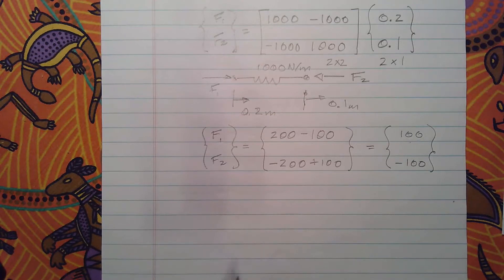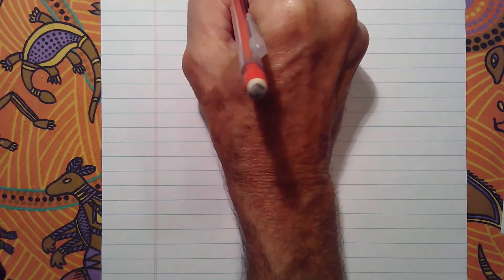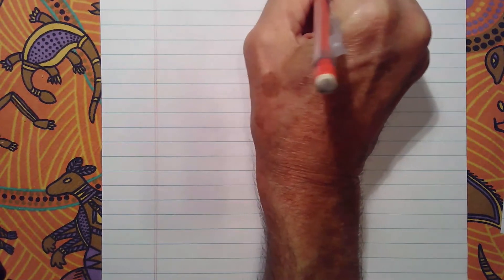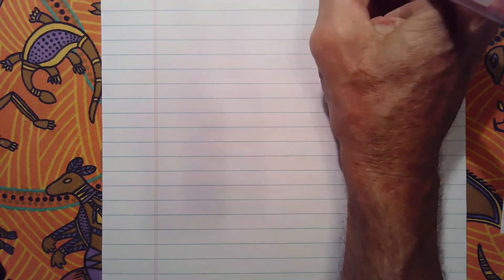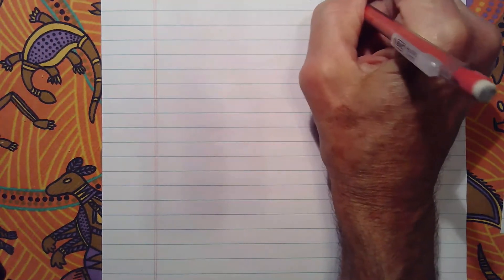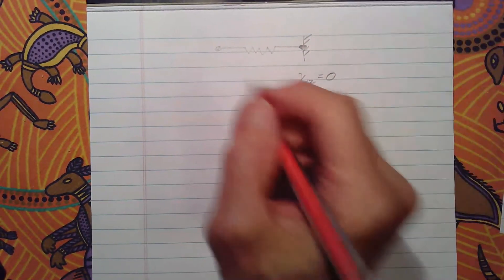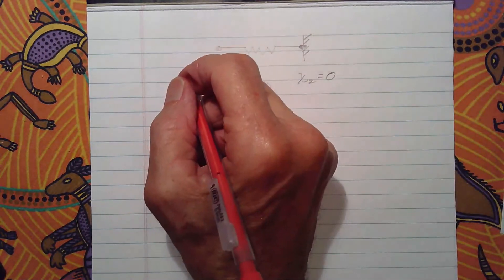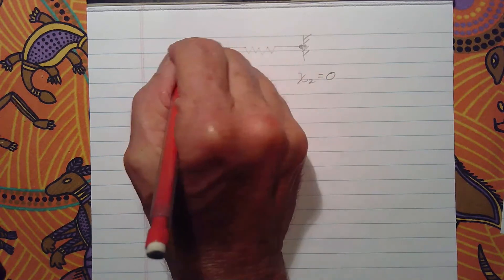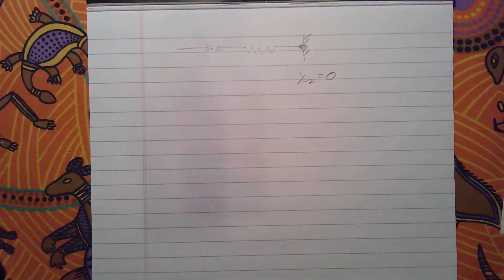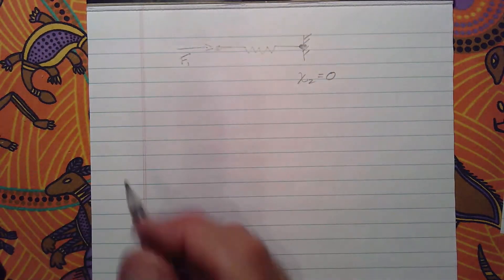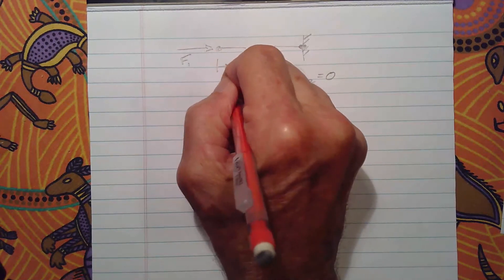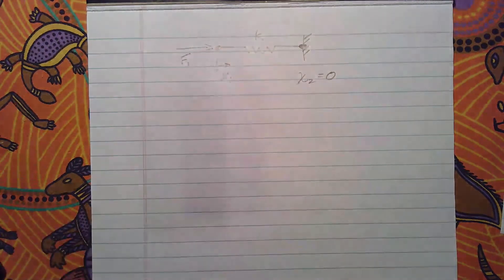Let's do another example — a little bit different but also simple. We have a spring element where we fix x2, so x2 equals zero, and then we apply a known force at node 1. In the previous problem we knew the nodal deflections; in this case we have a specified force applied to the spring.